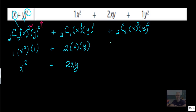And then it goes up. So 2 choose 2 is 1, and x to the power of 0 is just 1, times y squared.